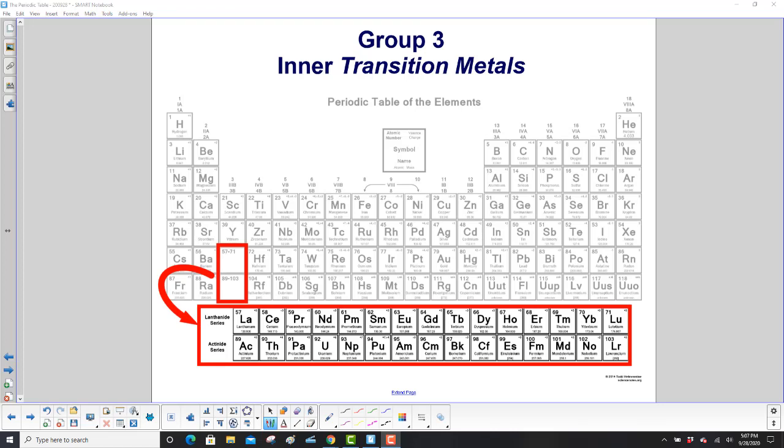Group 3 contains the inner transition metals. And these look a little unusual, right? You have these two spaces over here, and see the two rows here? Starts with lanthanum and actinium. They just fit right here. And we'll show you later what that looks like on a full periodic table. So those are the inner transition metals. The lanthanide series and the actinide series.